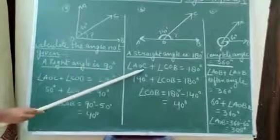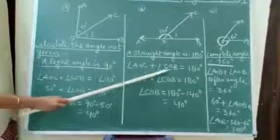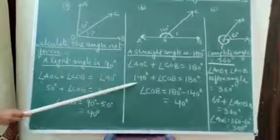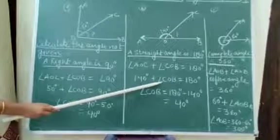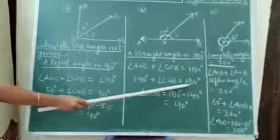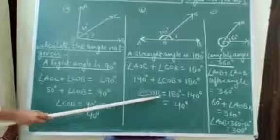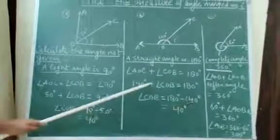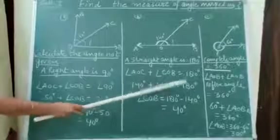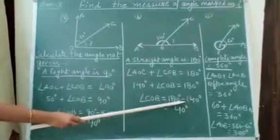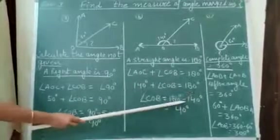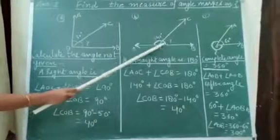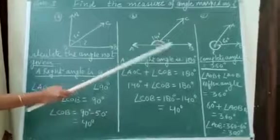So, angle AOC plus angle COB is equal to 180. AOC is equal to 140, plus angle COB equals 180. So, COB is equal to 180 minus 140. When we move a term to the other side, the sign changes from plus to minus. So, the answer is 40 degrees. This angle is 40 degrees.